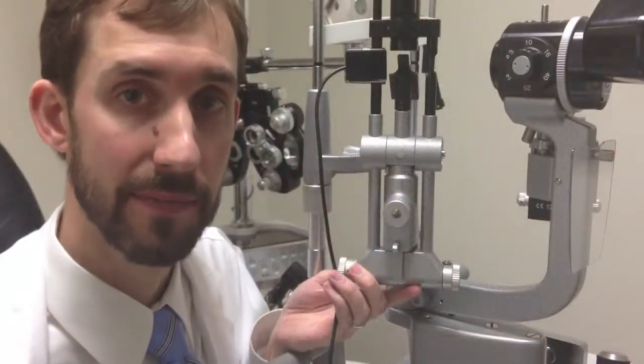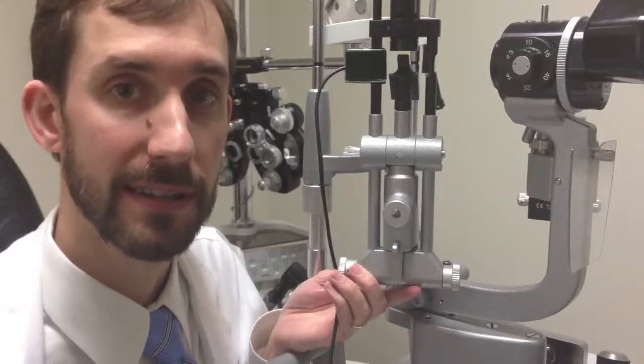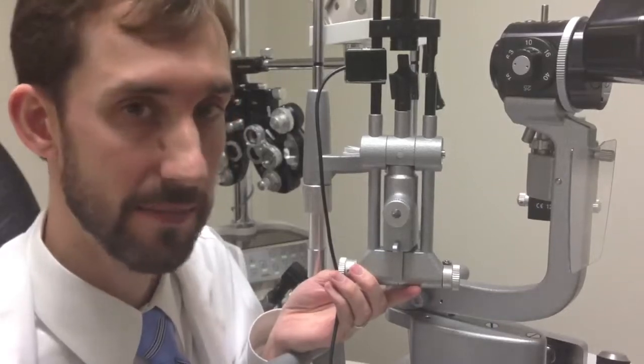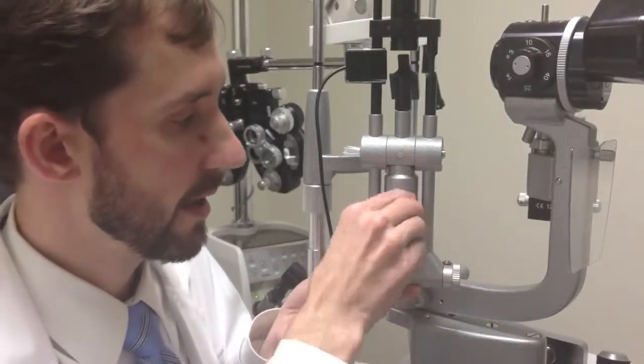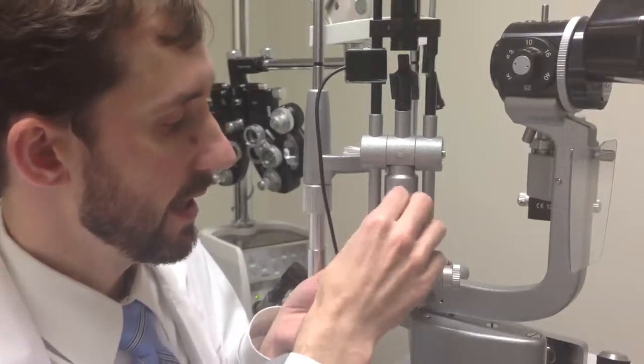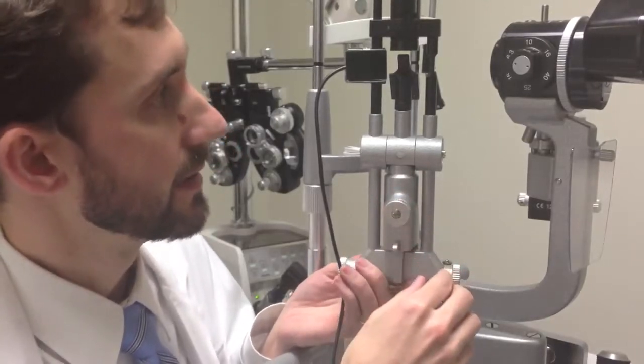First, de-center the slit beam. For the classic Haag-Streit slit lamp, you can de-center the slit beam by turning the knob here to the left and rotating the slit beam arm